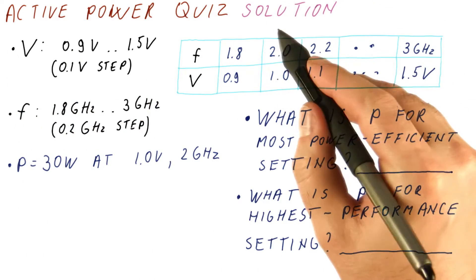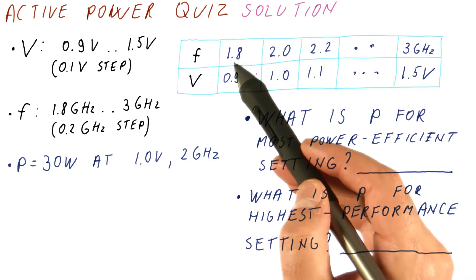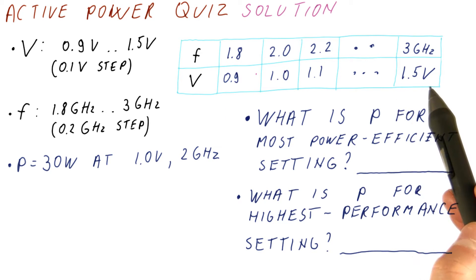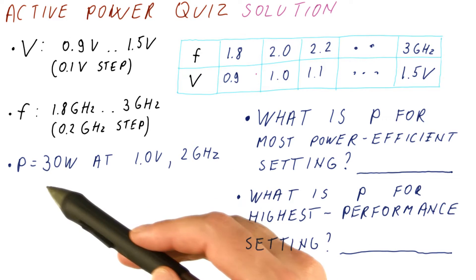Now let's discuss the solution for the active power quiz. What we had was that to achieve some frequency, we needed to increase voltage beyond some point. And we knew that at one volt and two gigahertz, the power was 30 watts.